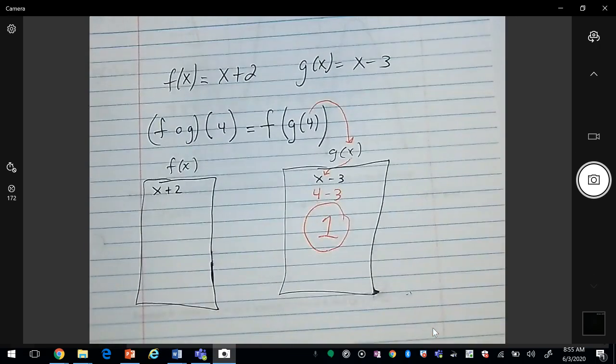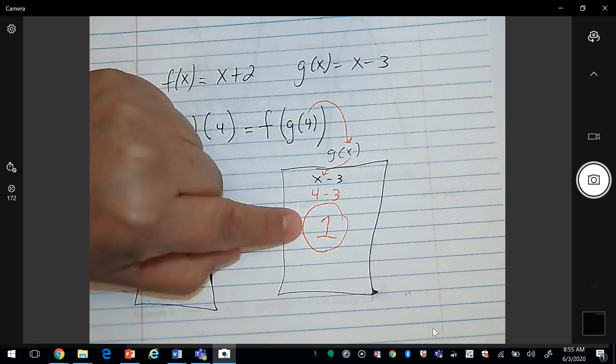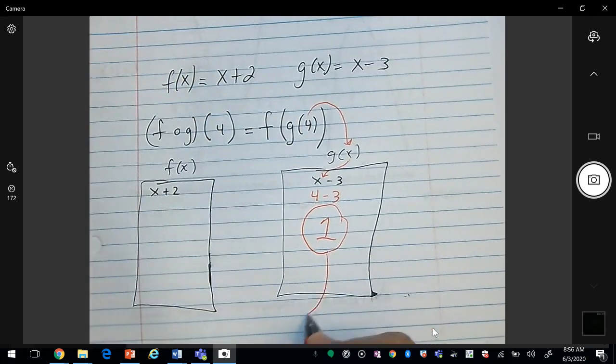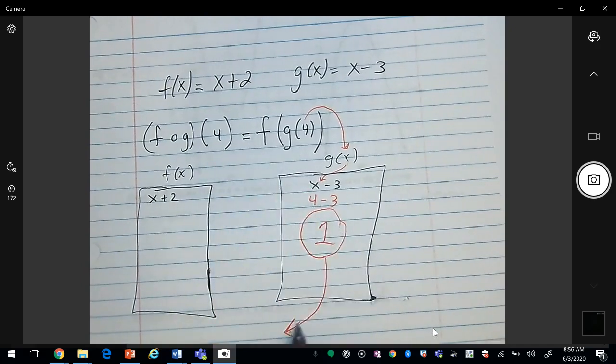Okay, so that's going to be your input is 4, and then this machine gives you an output of 1. So the 1 comes out, and then it's going to go to the next function, in this case f.